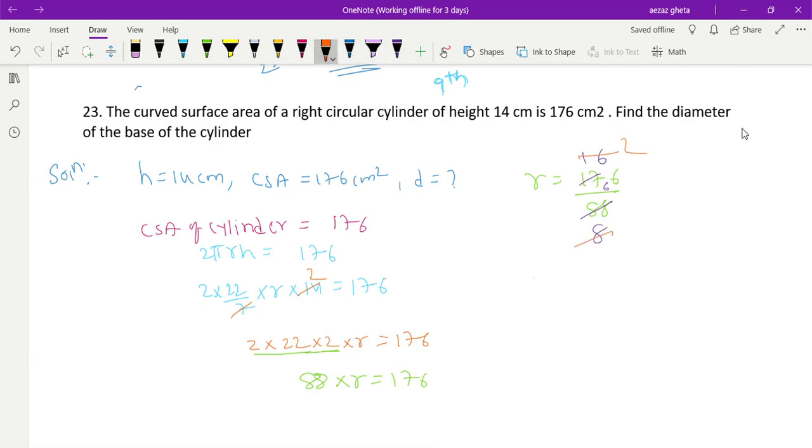Now for the diameter - you know diameter is always 2 times the radius, so d = 2 × 2. The answer is 4 centimeters. Very simple question.